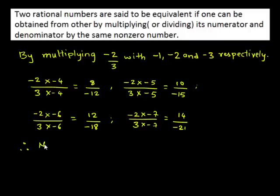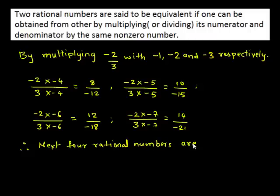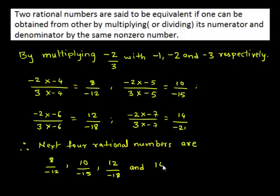Therefore, the next four rational numbers are 8 upon negative 12, 10 upon negative 15, 12 upon negative 18, and 14 upon negative 21.